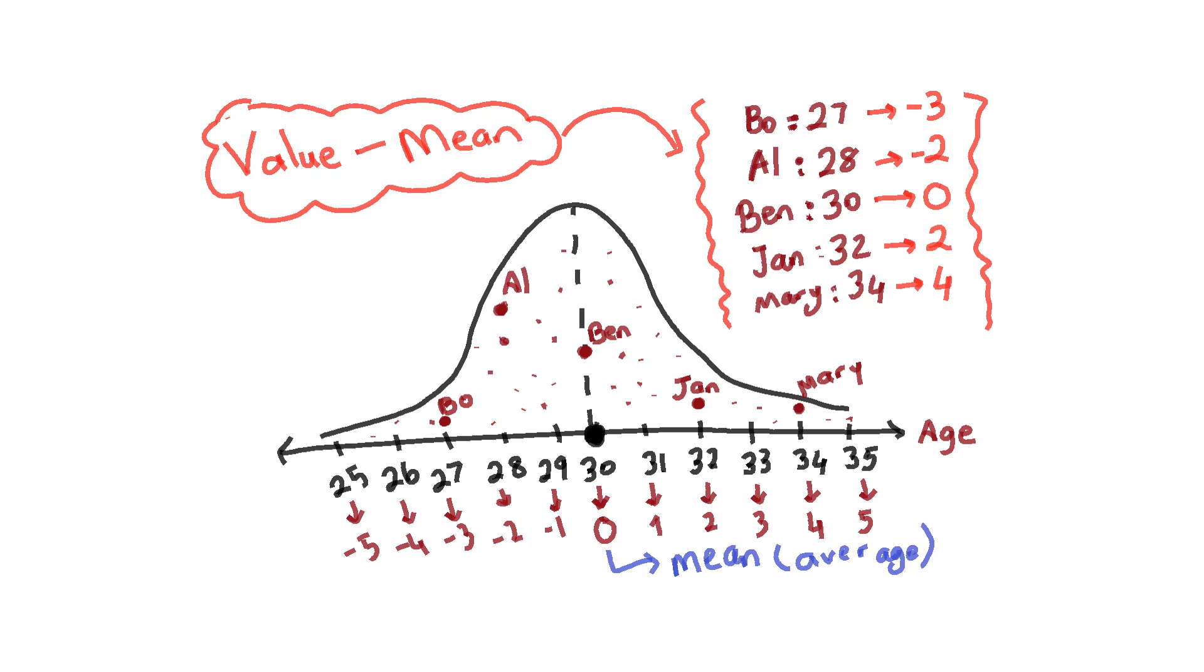So our new values are no longer 27, 28, 30. Our new values are now minus 3, minus 2, 0, 2, and 4. So we have done the centering.